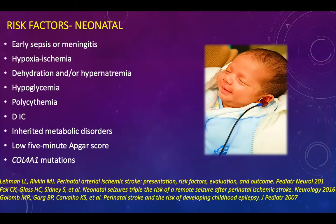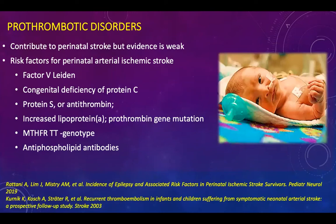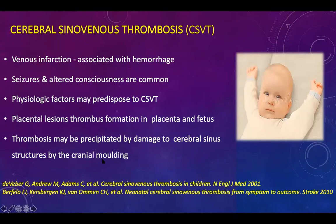Neonatal risk factors include meningitis, sepsis, global hypoxemia, dehydration, hyponatremia, DIC, hypoglycemia, polycythemia, and certain mutations — the common causes encountered in our neonatal units. Among prothrombotic disorders, they contribute to perinatal stroke, but the evidence is weak. Risk factors for arterial ischemic stroke include factor V Leiden, congenital deficiency of protein C, S, and antithrombin-3, and certain genetic mutations including antiphospholipid antibodies.